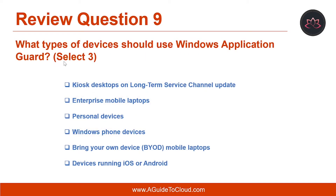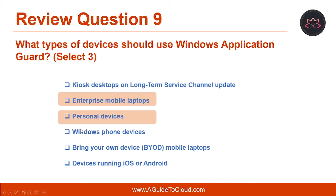Let's look at the last question. What type of devices should use Windows Application Guard? Select three. Enterprise mobile laptops, personal devices, and bring your own devices mobile laptops.